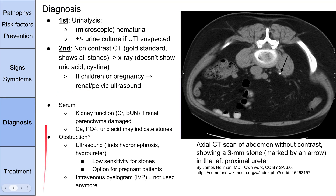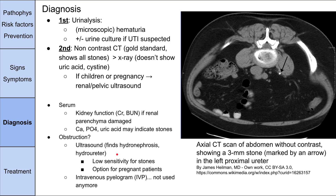There are some other tests you could do in the context of kidney stones. Checking serum creatinine and BUN assesses kidney function if you suspect renal parenchyma damage. You can also check serum calcium, phosphate, and uric acid, which might be very high in patients with those stone types. If you suspect obstruction, ultrasound can show hydronephrosis or hydroureter. Ultrasound isn't the best for detecting stones directly but is good at identifying blockages in the genitourinary tract and is safe for pregnant patients.